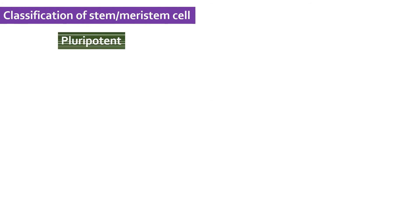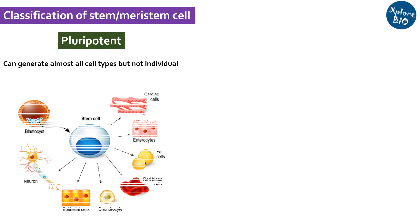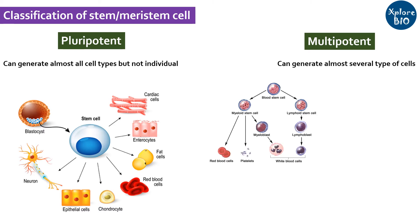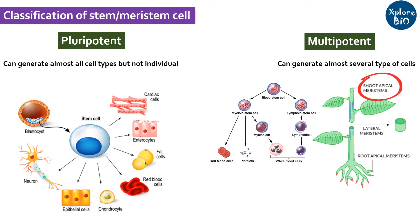A pluripotent cell can give rise to various types of cell feeds but not whole organisms, for example, embryonic stem cells in animals. A multipotent cell can form different cell types but not complete organisms, for example, hematopoietic stem cells that form different types of blood cells. A shoot apical meristem that forms various types of shoot tissues like leaf and flower. The demarcation between pluripotent and multipotent is not clear. And shoot, root or intercalary meristems may be classified as pluripotent too.